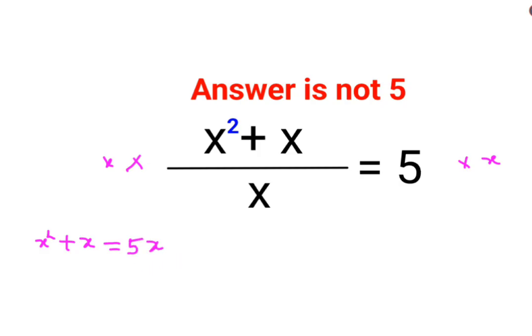Next what I can do over here is see we can take all of the numbers on the other side of the equal to so I have x square plus x minus 5x equals to 0. So I have x square minus 4x equals to 0.